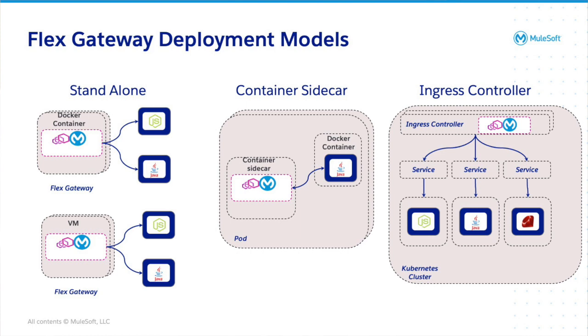Some customers may have standalone monolithic applications running on virtual machines. In those cases, customers would be able to run the Flex Gateway as a Linux service inside those virtual machines and provide the right level of protection for their APIs. In short, the Anypoint Flex Gateway provides the ability to adapt to any architectural pattern to manage any API, service, or microservice.